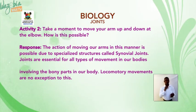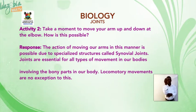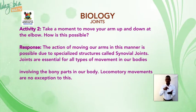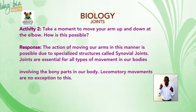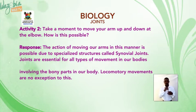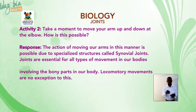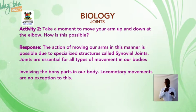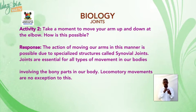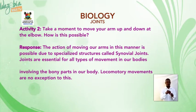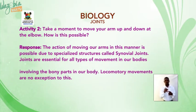Activity two: take a moment to move your arm up and down at the elbow. How is this possible? The action of moving our arms in this manner is possible due to specialized structures called synovial joints. Joints are essential for all types of movements in our bodies, and locomotory movements are no exception to this.